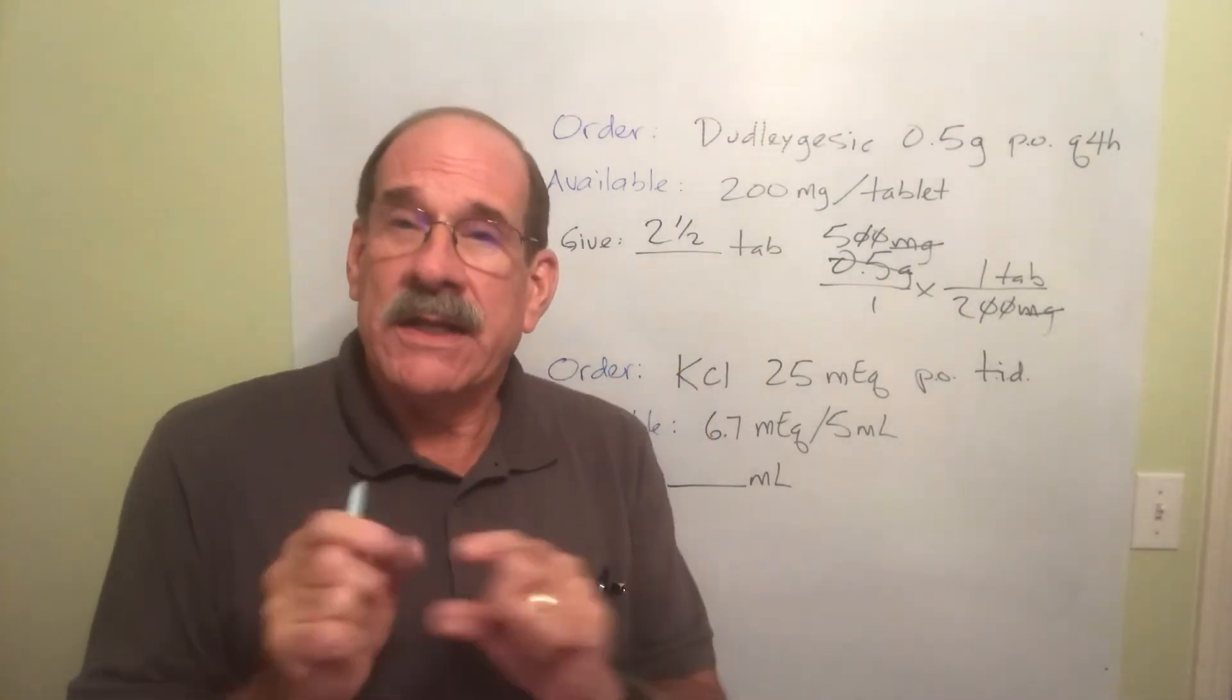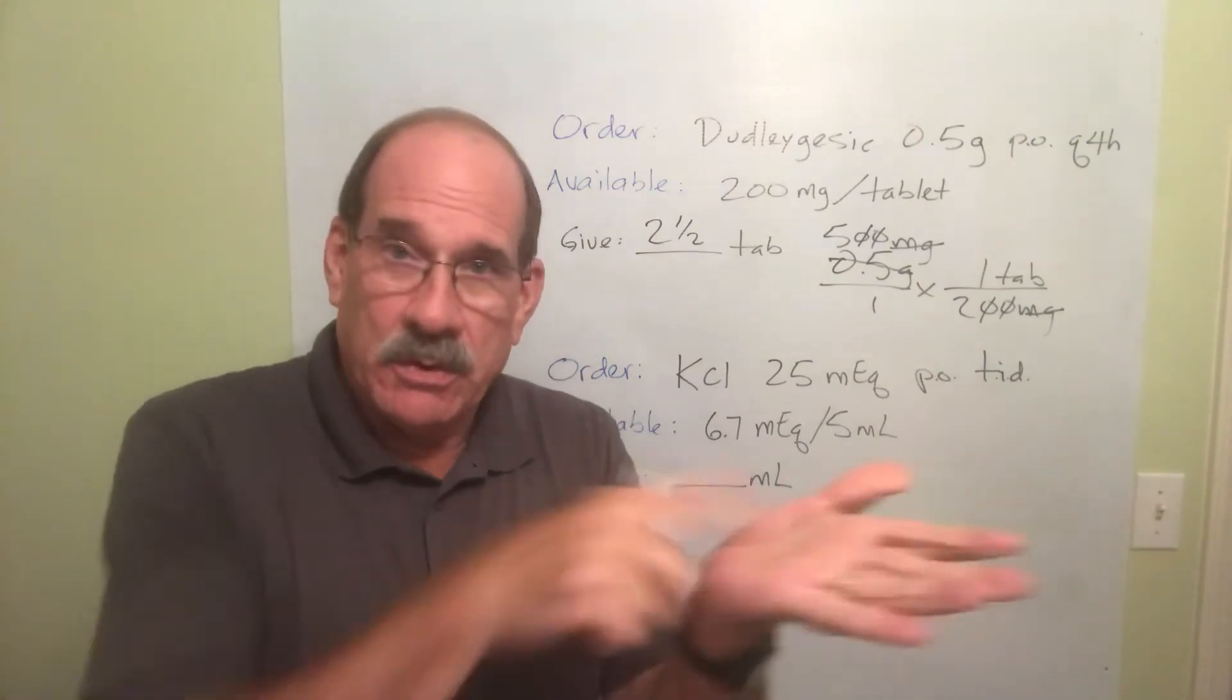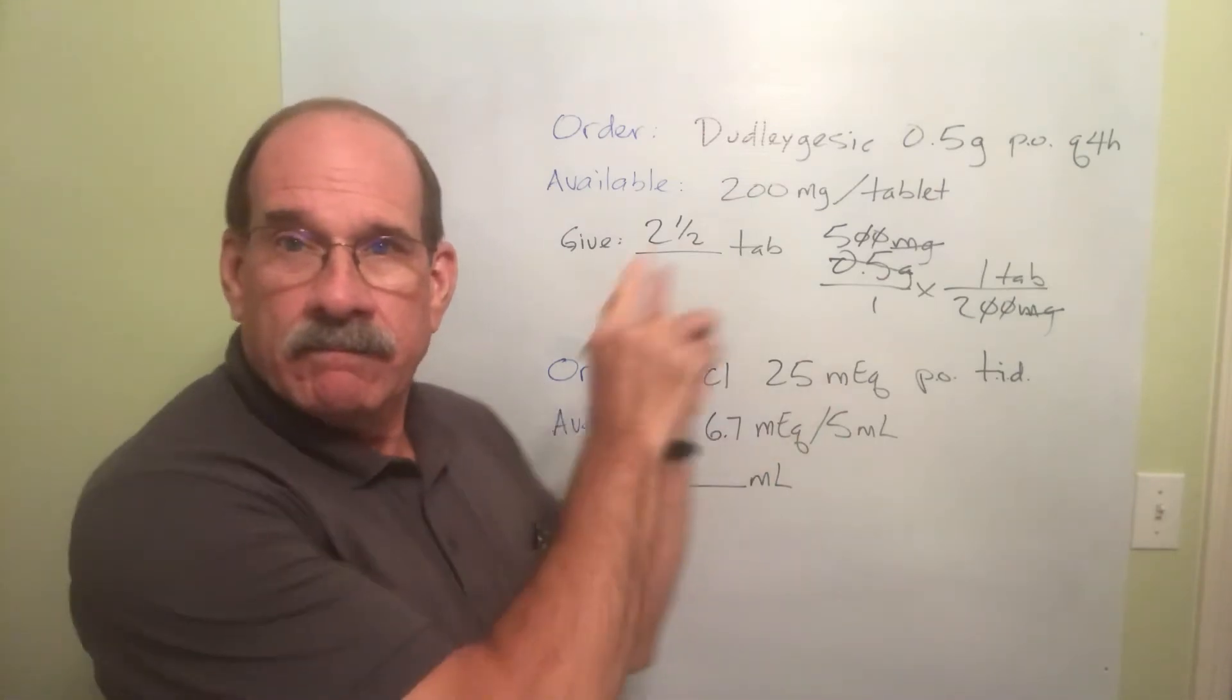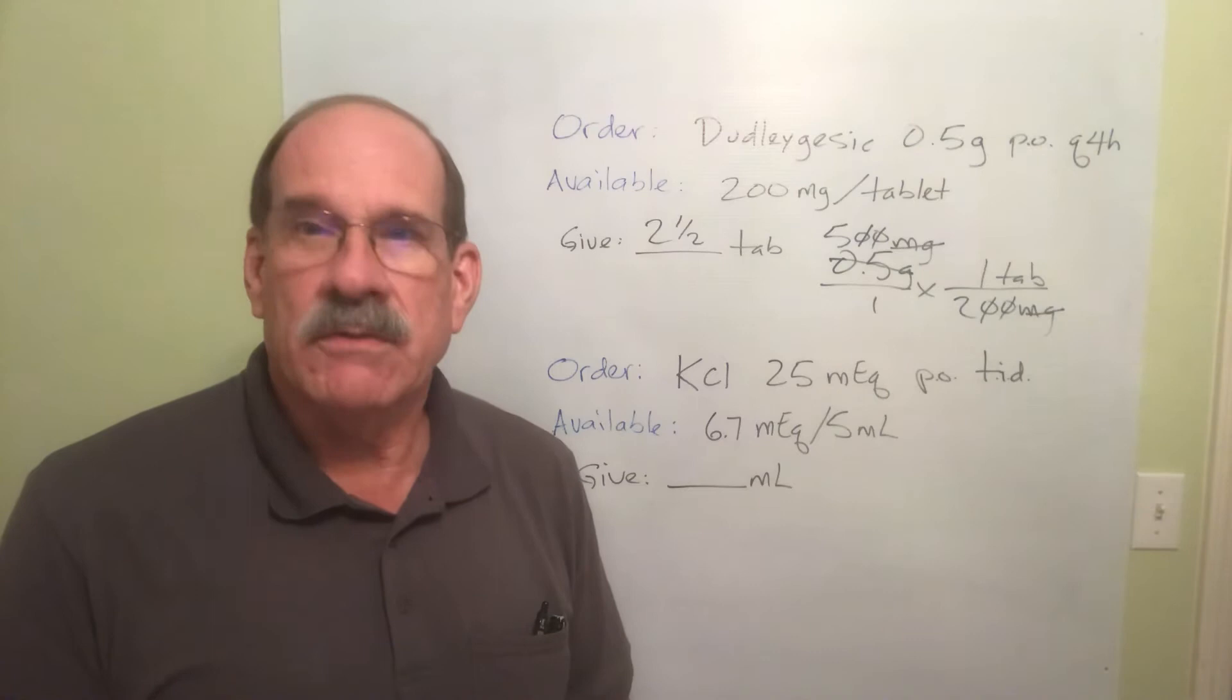Well two and a half, meaning yeah. If these are scored tablets with a little groove down the middle, you can break one in half. Give two entire whole ones. Break another one. Give half of that one. That's two and a half. There's your answer. You got that of course didn't you? Of course you did.